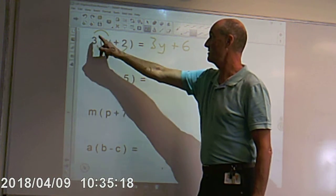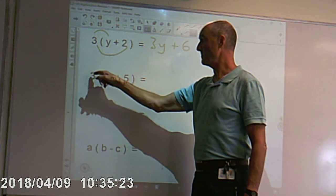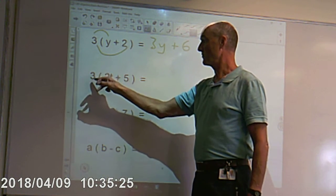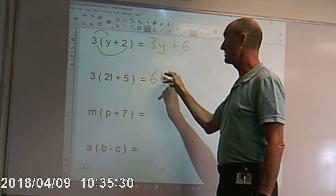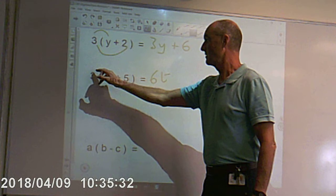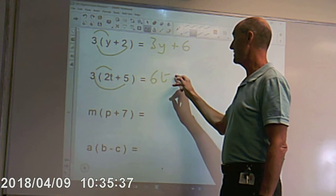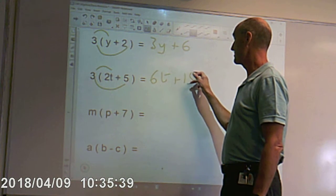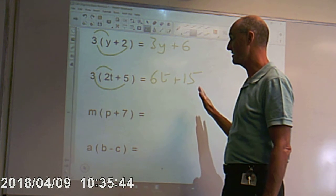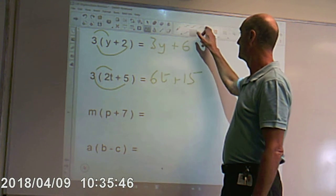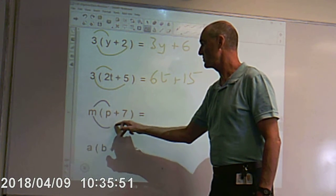3 times y is 3y. 3 times 2 is 6. Multiplying everything inside the bracket by what's outside the bracket — 3 times 2t is 6t, and 3 times 5 is 15. That's the best we can do; we haven't got a value of t, so that is our bracket fully expanded. m times p plus m times 7 — m times p gives you mp, and m times 7 gives you 7m.